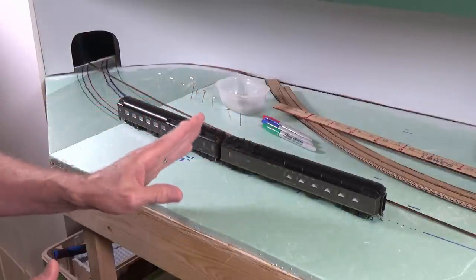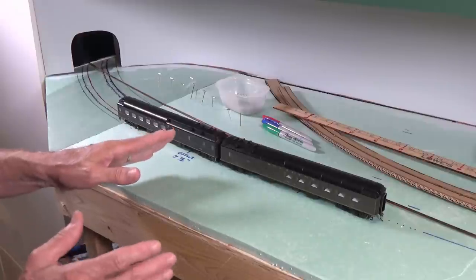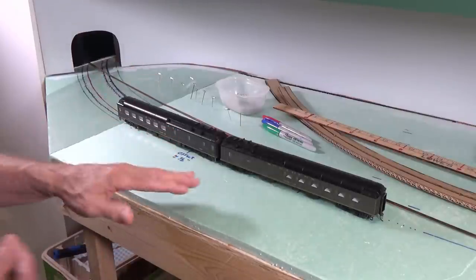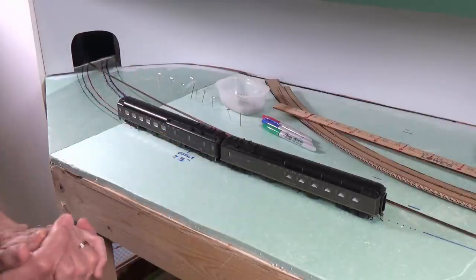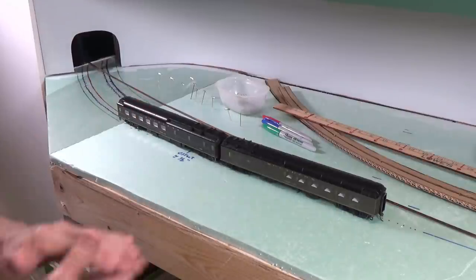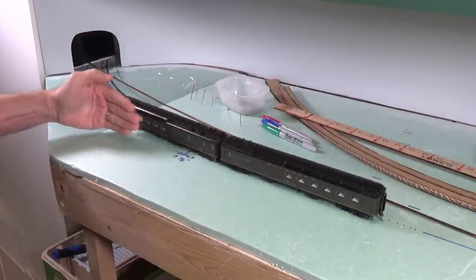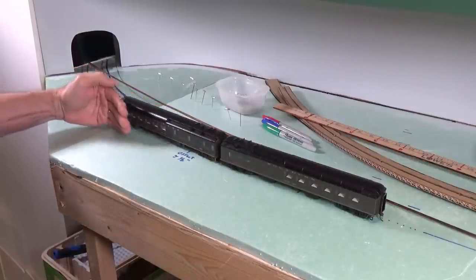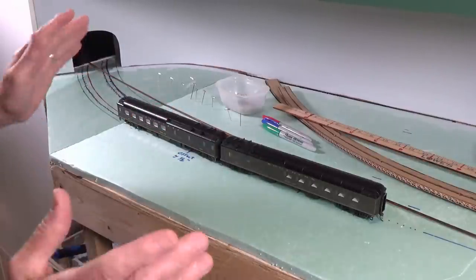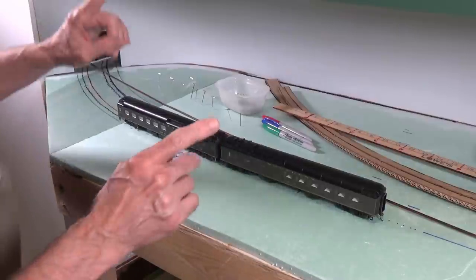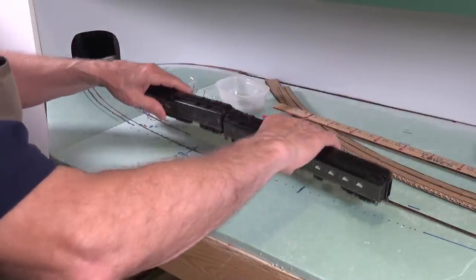Now, one thing that you can do is by simply changing the angle of the curve as you go from that straight into the curve section, it will greatly reduce that outward lurch or swing appearance. And it just makes your passenger cars and your long steam locomotives and even some of your long E units, those kind of things, and the more modern diesels as well, it just makes them look a lot better because they enter the curve much more smoothly. So let me get these out of the way and we'll talk about how you go about doing that.